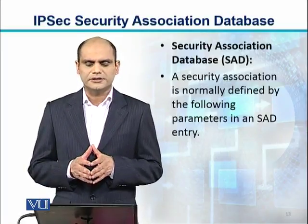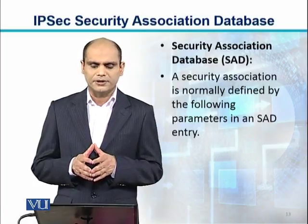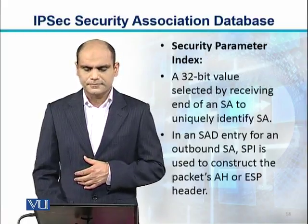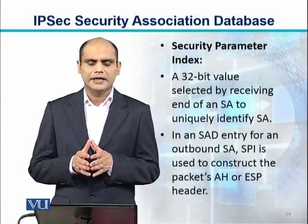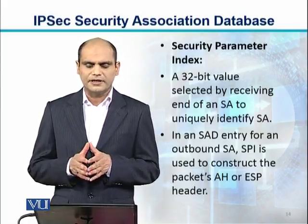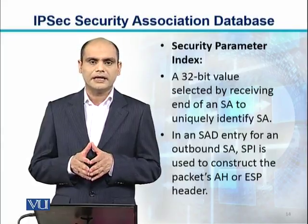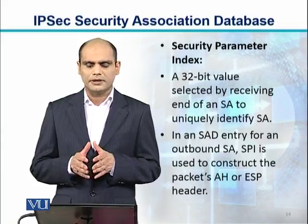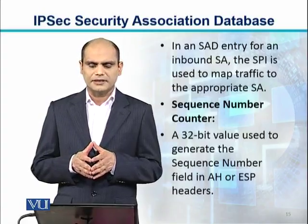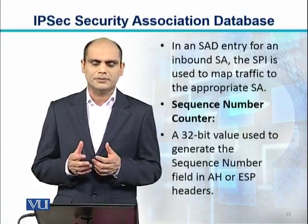A Security Association is normally defined by the following parameters in an SAD entry. The first parameter is SPI, Security Parameter Index — a 32-bit value selected by the receiving end of an SA to uniquely identify the SA. In an SAD entry for an outbound SA, the SPI is used to construct the packet's AH or ESP header. In an SAD entry for an inbound SA, the SPI is used to map the traffic to the appropriate SA.